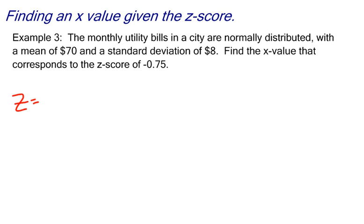Let's keep in mind that our formula for z-scores is z equals x minus mu, which is the mean, divided by standard deviation, sigma.